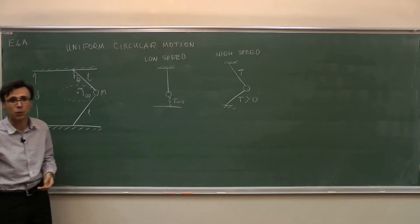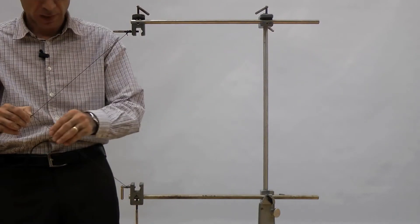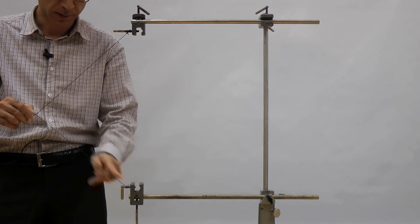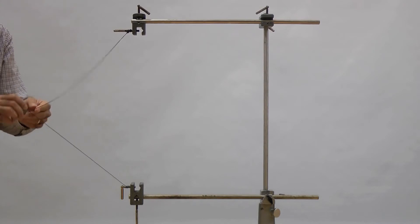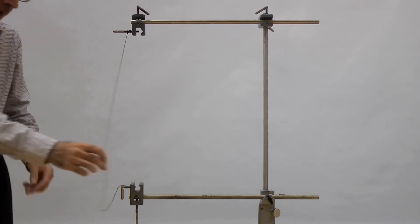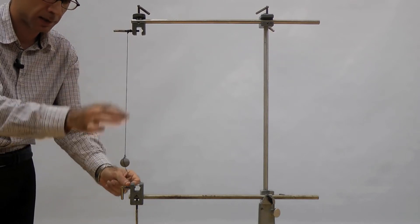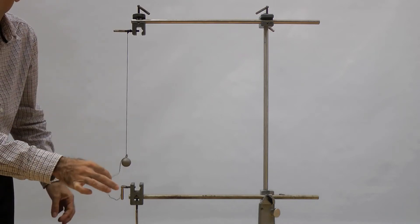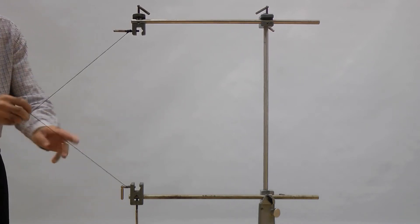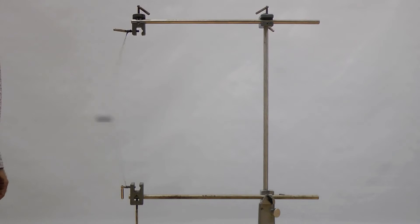Let's demonstrate what happens. Here is the setup: we have two strings, upper and lower, of exactly the same length, and here is our object with mass m. When the speed is small, there is some tension in the upper string equal to mg, but there is no tension in the lower part of the rope. When we give a high speed, there is clearly tension in both strings, which are non-zero.